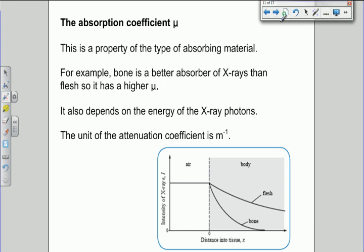So the absorption coefficient, effectively, is how well or how poorly a certain type of tissue absorbs x-rays. And it's best explained, I think, from this little graph here. So this is the distance that the x-rays are travelling into the tissue, i.e. how far they've penetrated. And this is the intensity of the x-rays at that depth.